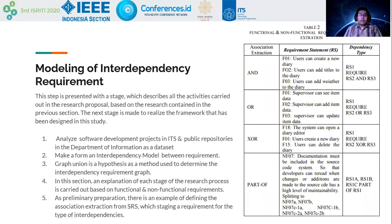Modeling of interdependency requirements is presented with stages describing all activities carried out in the research proposal. Based on the previous section, the next stage is made to realize the proposed framework. Step one: analyze software development projects in ETS and public repositories in the department of information as a dataset. Then form an interdependency model between requirements. Graph union is hypothesized as the method used to determine the interdependency requirement graph. The research process is carried out based on functional and non-functional requirements, with an example defining the expression from an SRS document staging a requirement for the type of interdependency.